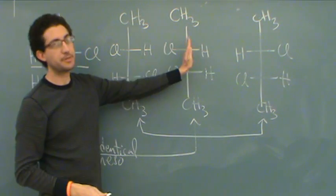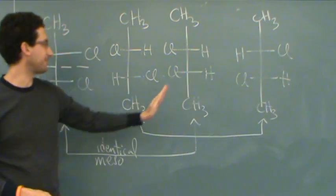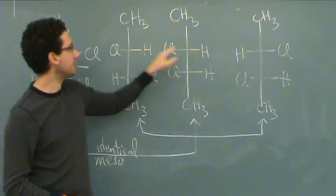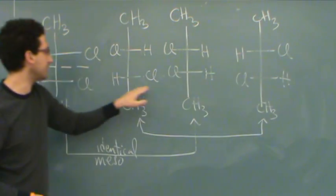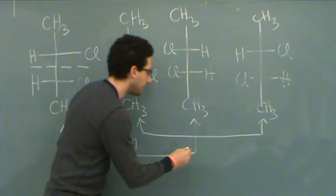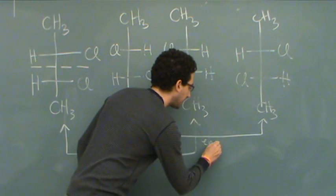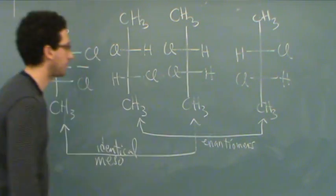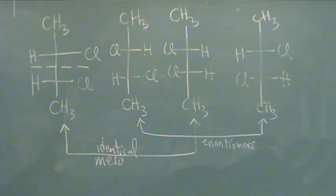However, if you can imagine a mirror plane through kind of the center of this third molecule, CLs match up, Hs match up. These CLs match, and these Hs match, and then the methyl groups, of course, match. These are mirror images. What do we call these? Enantiomers. They're non-superimposable mirror images.